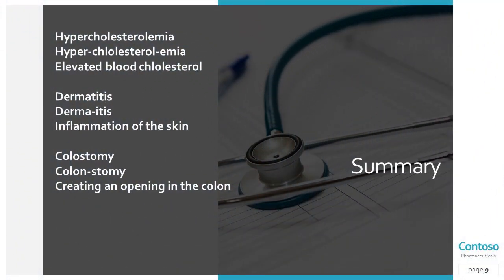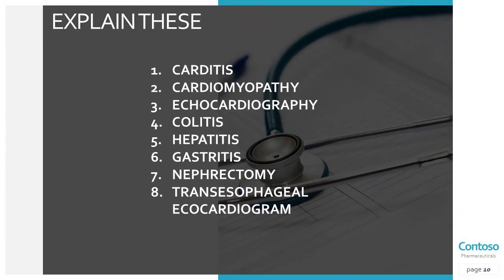This is the summary. If you find a difficult and long medical term like hypercholesterolemia, break it into prefix, root words, and suffix: hyper means elevated or above, cholesterol is the root word, and aemia means blood condition — so it means elevated blood cholesterol. Another example: dermatitis — derm is skin, itis is inflammation, so inflammation of the skin. Colostomy — colo is colon, stomy is creating an opening — so creating an opening in the colon. Now take a look at the eight medical terminology examples on the slide and please try to explain them in your worksheet. Thank you so much, have a nice day.